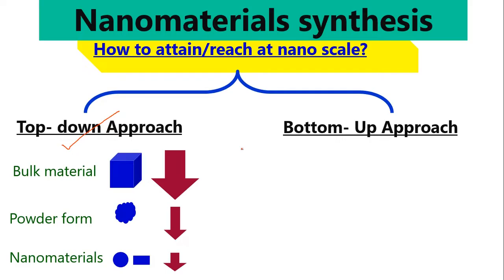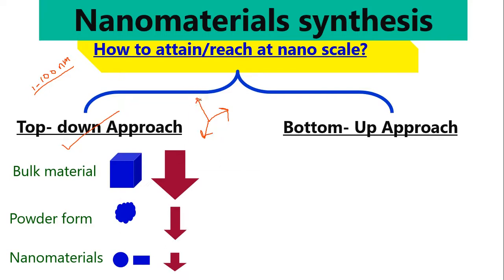Nanostructured materials may be quantum dots, nanoparticles, nanorods, nanofibers, or nanotubes. We know that 'nano' means that at least one dimension of that material is in the range of one to one hundred nanometers. Since every material has three dimensions — x, y, z — at least one dimension must fall in that range for it to be called a nanomaterial.